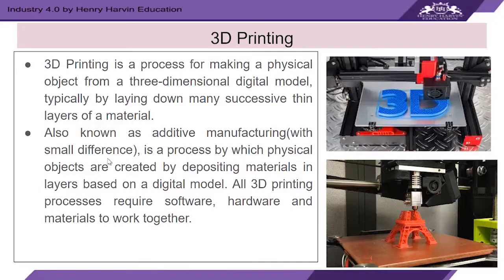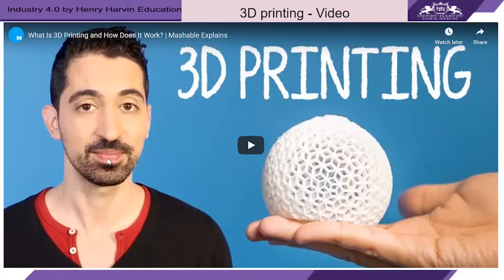3D printing is a supplement to, but slightly different from, additive manufacturing. 3D printing is a process of making a physical object from a three-dimensional digital model, typically by laying down many successive thin layers of a material. It is also sometimes called 3D manufacturing. It is a process by which physical objects are created by depositing materials in layers based on a digital model. All 3D printing processes require software, hardware, and materials to work together.